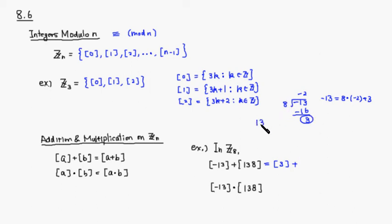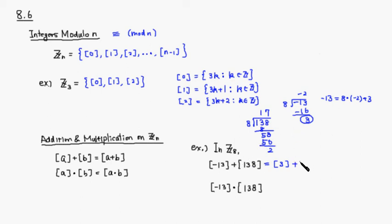For 138 divided by 8: 8 times 17 is 136, then 8 times 7 is 56 — the remainder is 2. So equivalence class represented by 138 is actually the same as equivalence class represented by 2. We carry out the addition: 3 plus 2 is 5, so the result is equivalence class represented by 5.